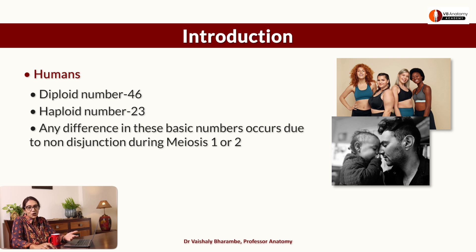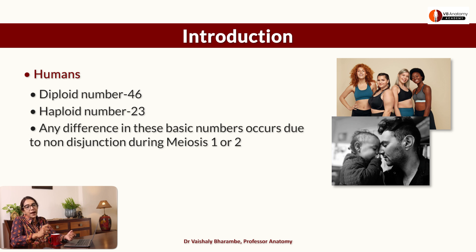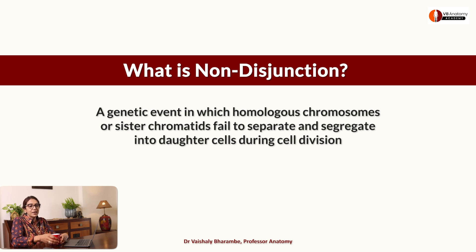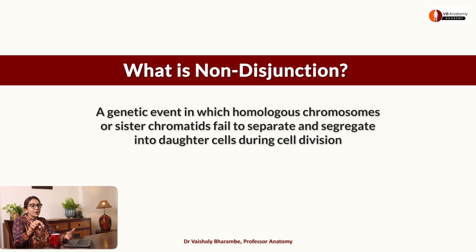Can you say it once? Non-disjunction, right? So this number that you're seeing as a constant — 46 — is altered if there is something called non-disjunction happening in the parent. Non-disjunction is a genetic event in which homologous chromosomes — that means chromosome pair one, pair two, or XY, which are also homologous chromosomes — and sister chromatids refuse to segregate into two daughter cells at the time of meiosis, or even mitosis, but meiosis is what we're talking about today.